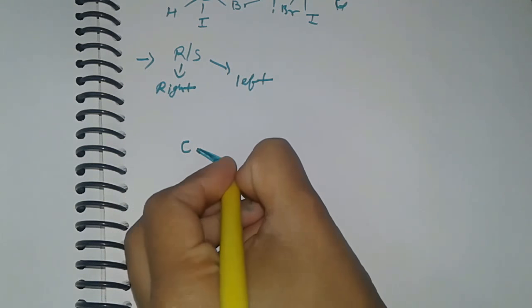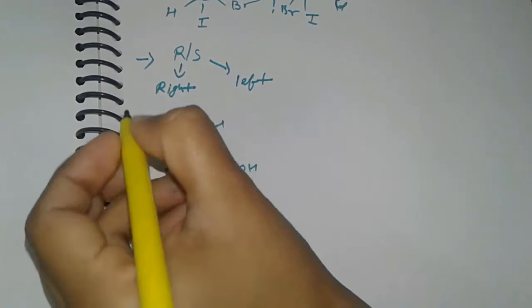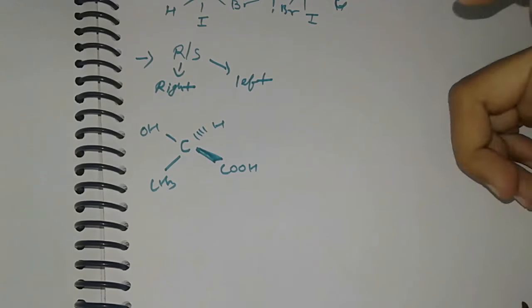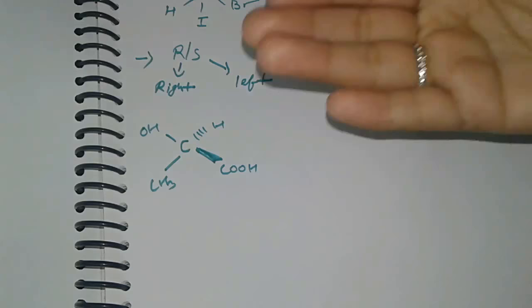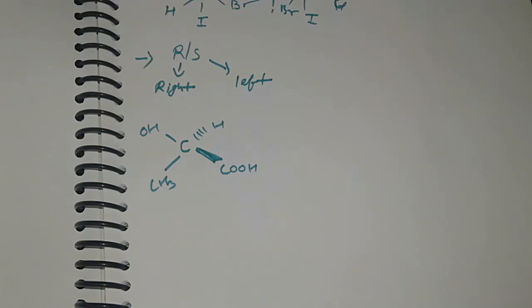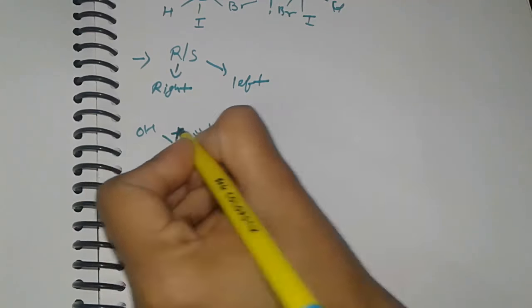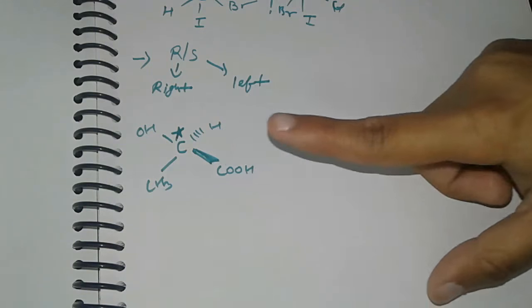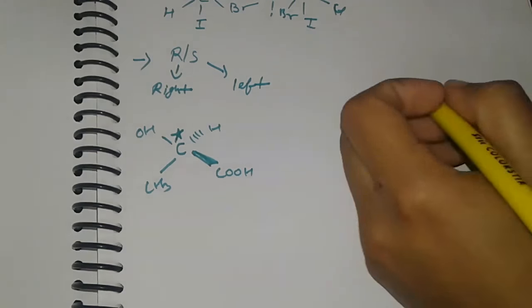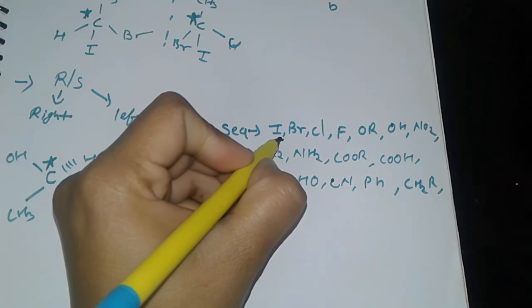If you take the example of a chiral carbon with this type of representation, this is called flying wedge representation. Flying wedge representation uses two valencies below the plane and above the plane to represent the actual molecule structure.